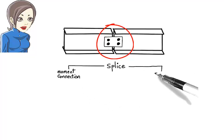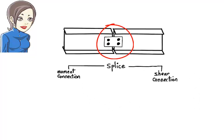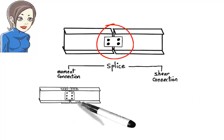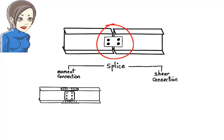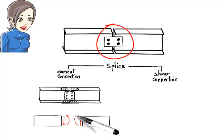as either a moment connection or a shear connection. A moment splice rigidly connects the two beam segments such that an internal bending moment, as well as a shear force, can develop at the joint.